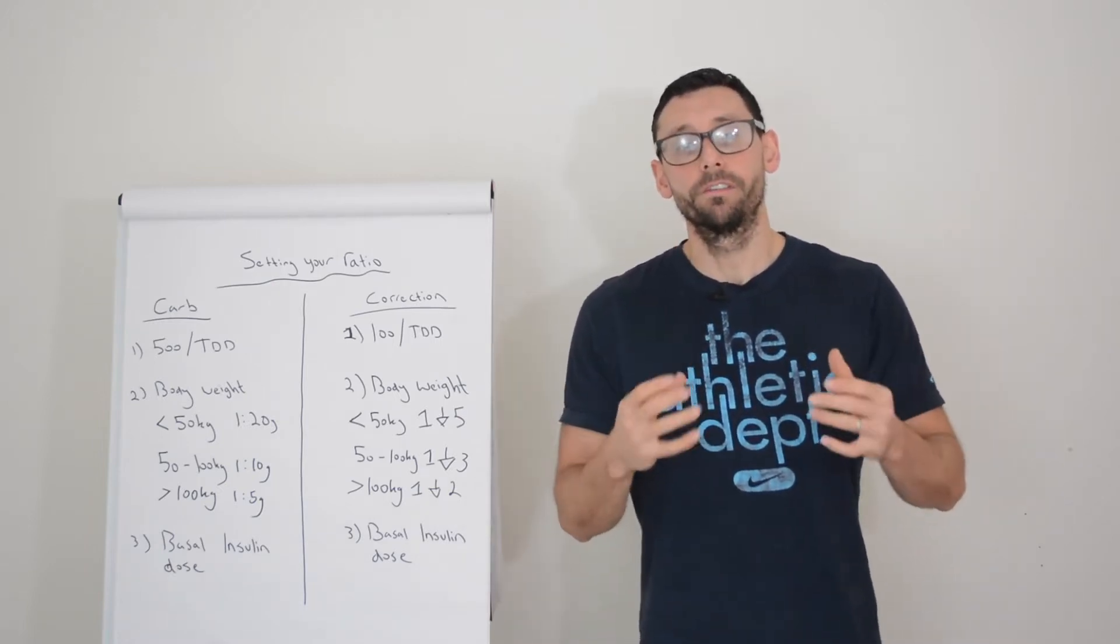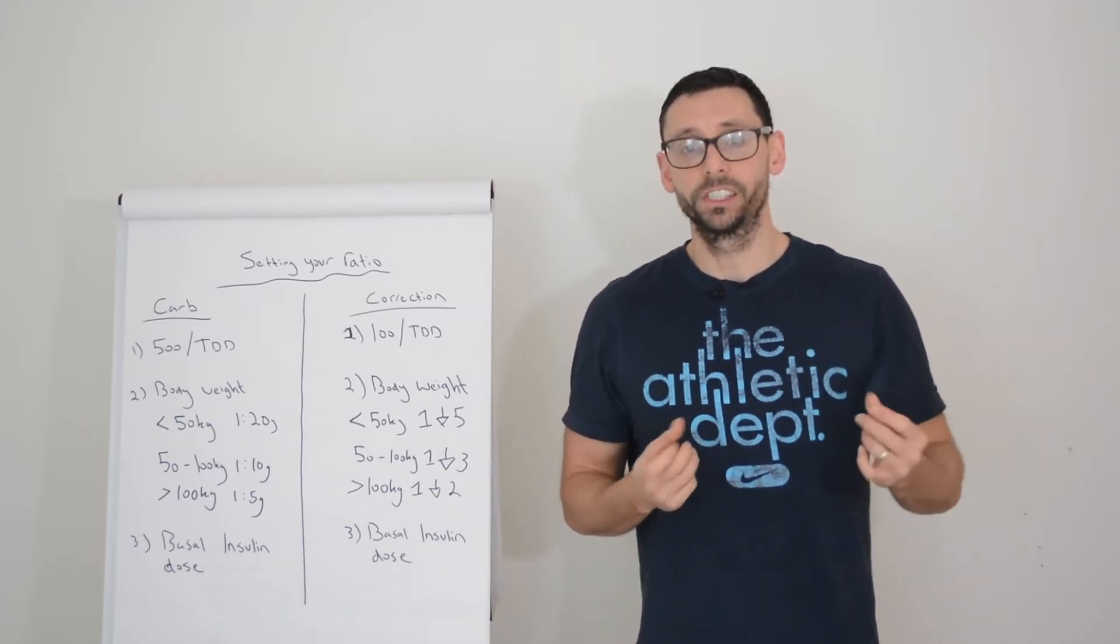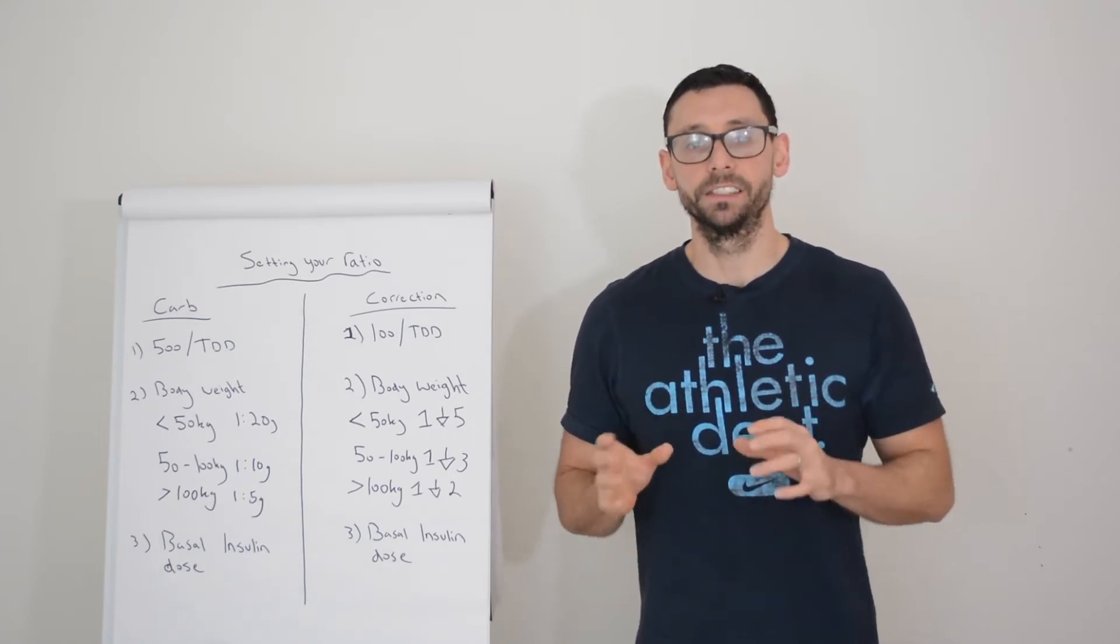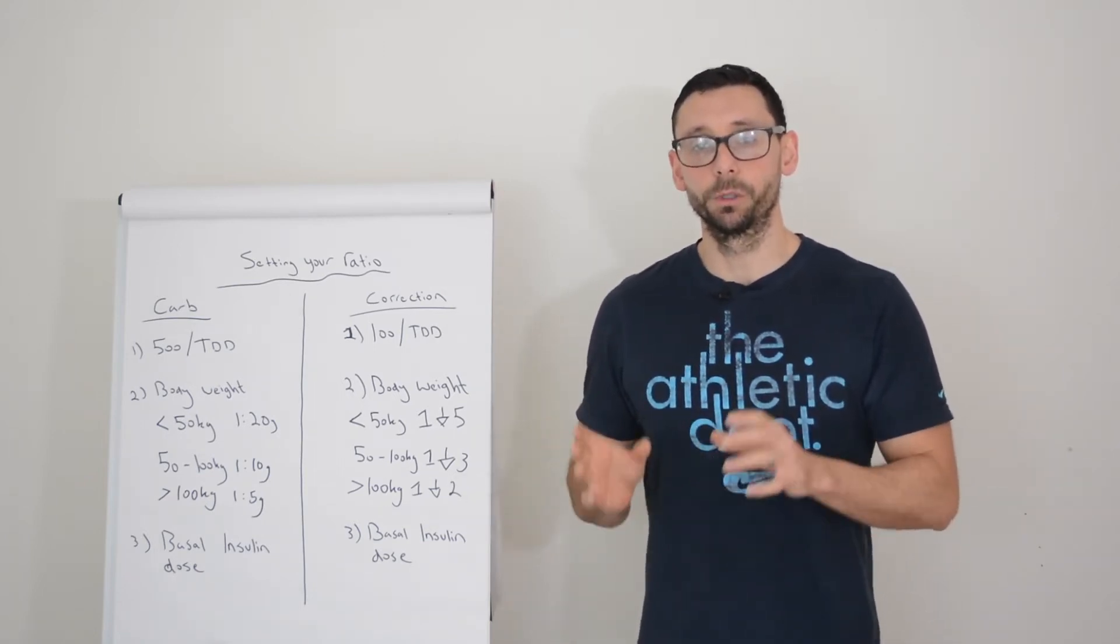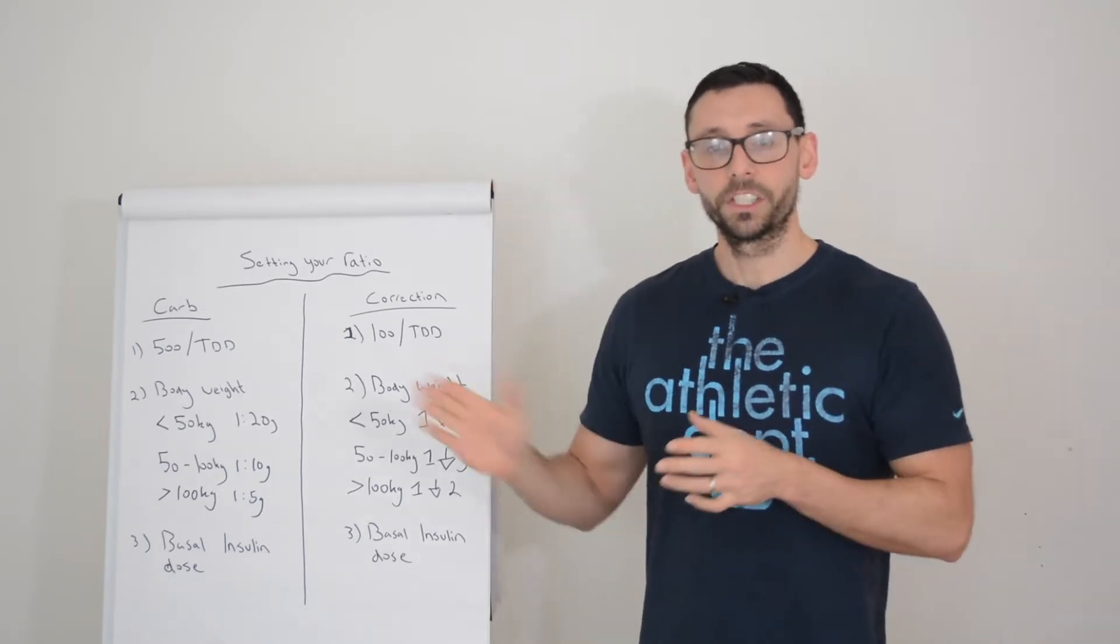But of course, so far all we've given you is example figures. So the next logical question is how do I figure out what my personal carbohydrate and correction ratio is? And there's a few methods you can use which we're going to discuss in this lesson. So let's jump right in.